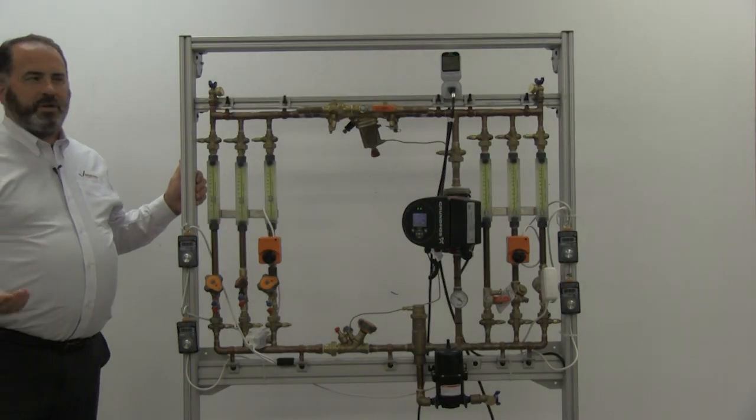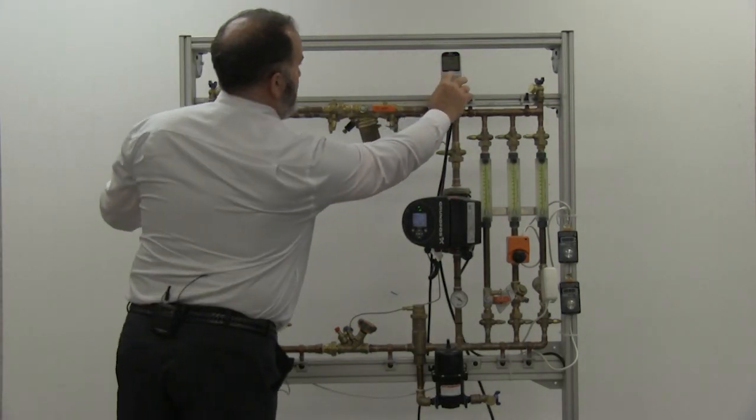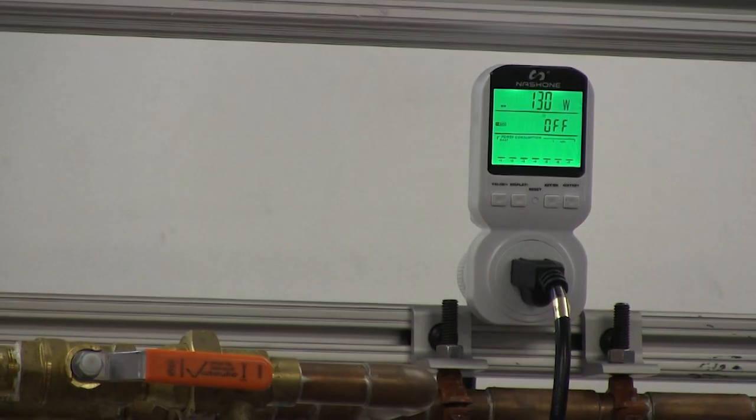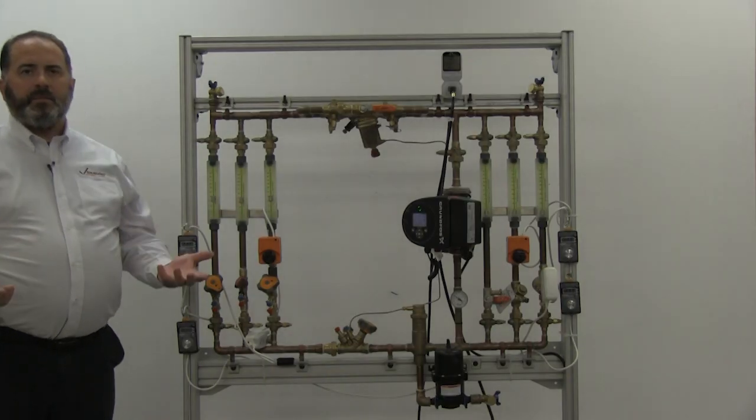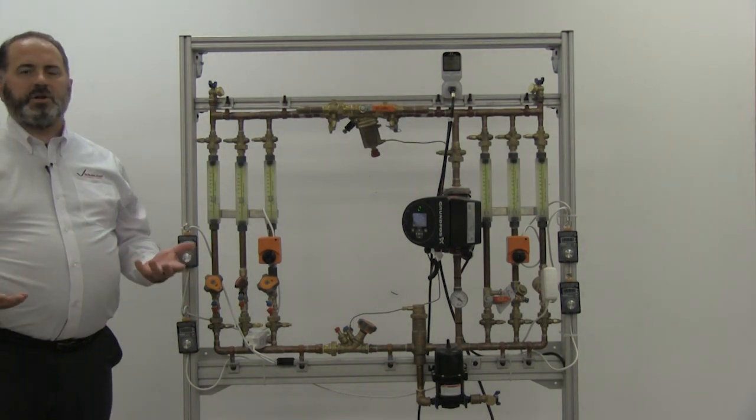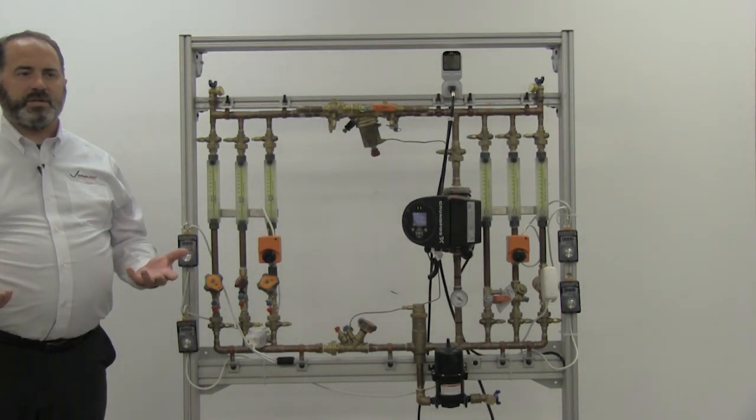What did that do to our energy usage? Look at that again. Now instead of being at 178 watts, we're now at 130 watts. So we've reduced a significant amount of energy usage just by balancing our system, by adding balancing and correctly establishing the flow rates where they need to be per design.